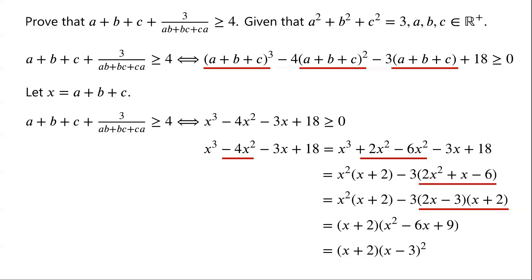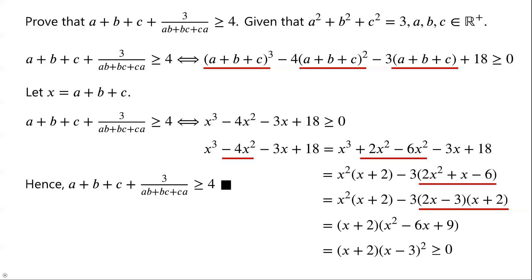Since x + 2 > 0 and (x − 3)² ≥ 0, the cubic algebraic expression (x + 2)(x − 3)² is greater than or equal to 0. Hence the original inequality holds, and the proof is complete.